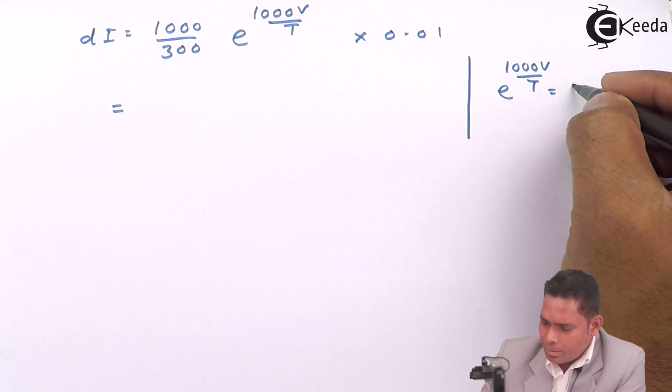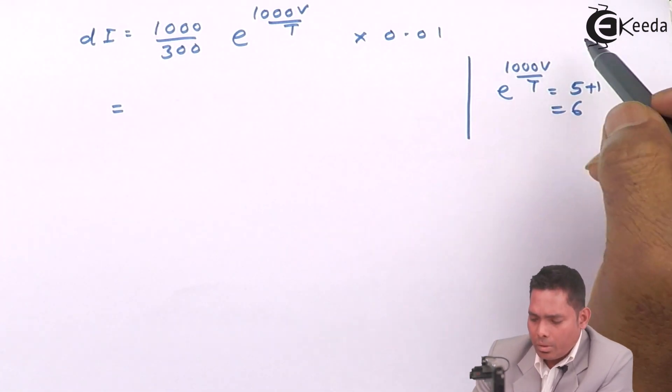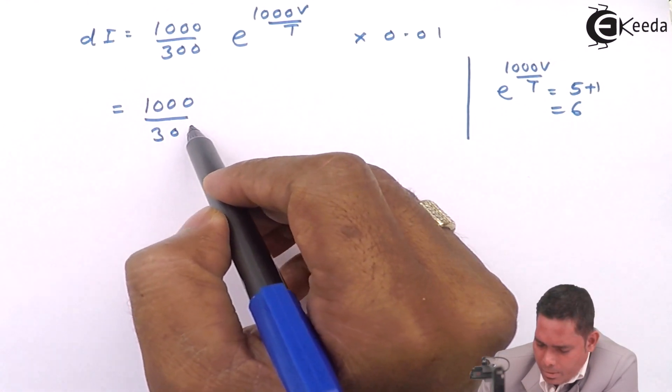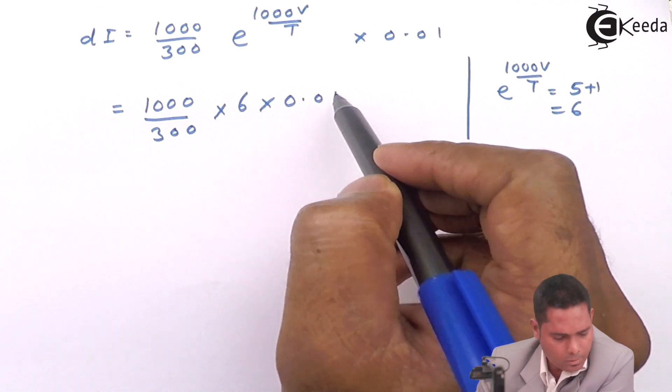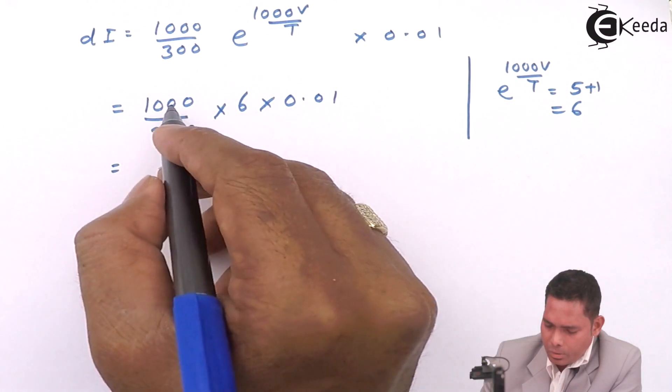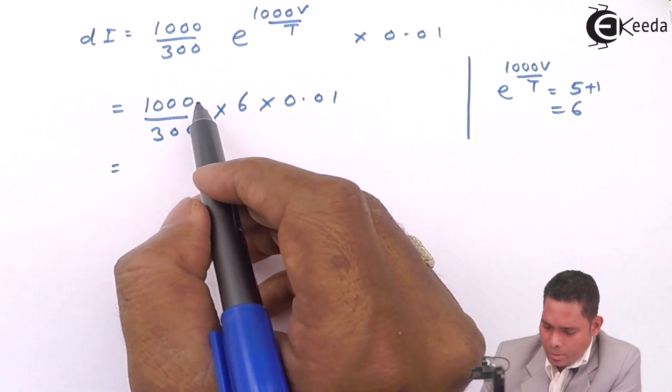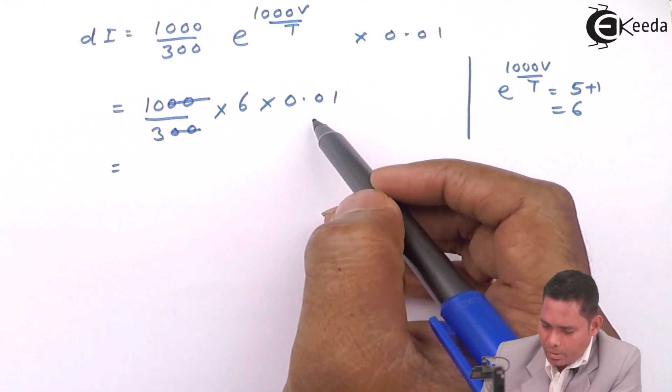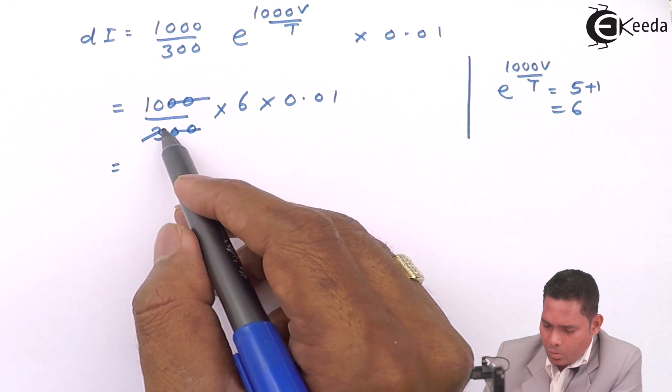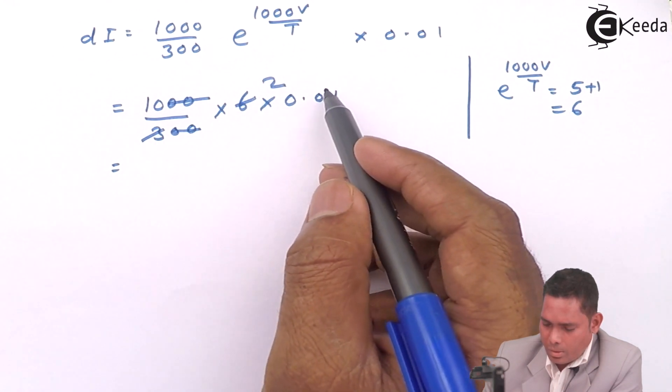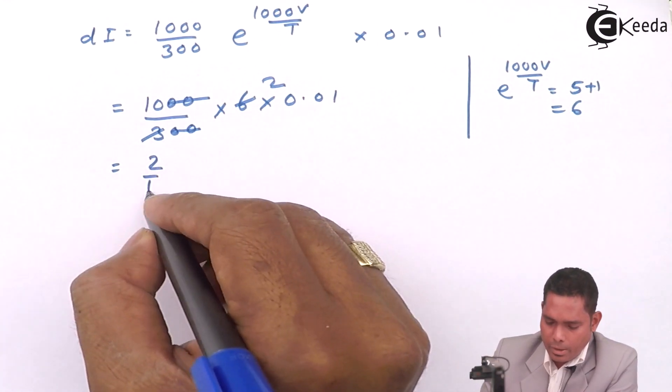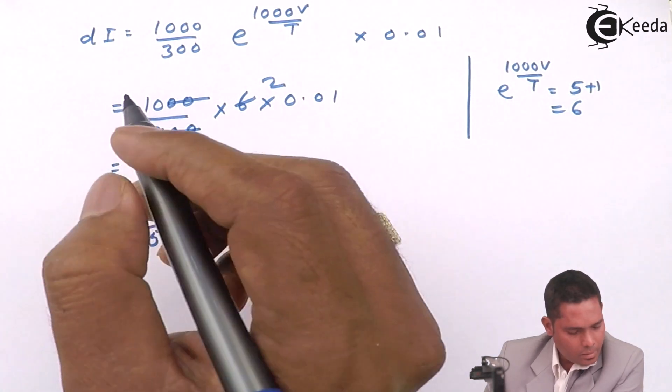Now, e raised to 1000V/T is equal to I plus 1, which equals 6. So I will substitute here: 1000 divided by 300 times 6 times 0.01. This comes to 1/5, which is 0.2.